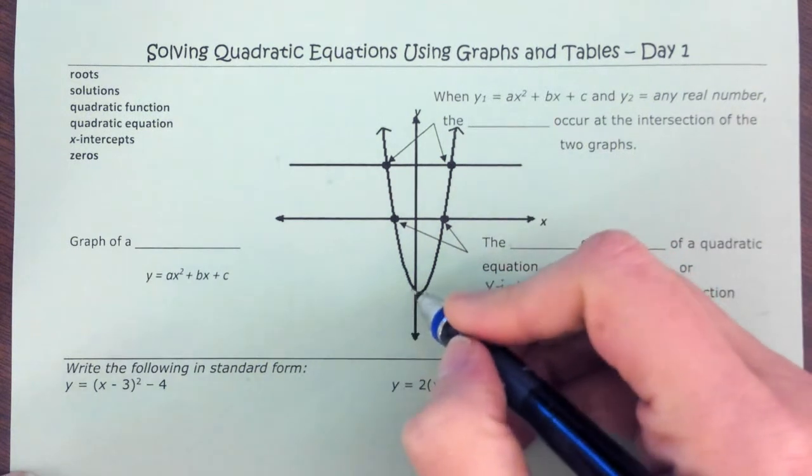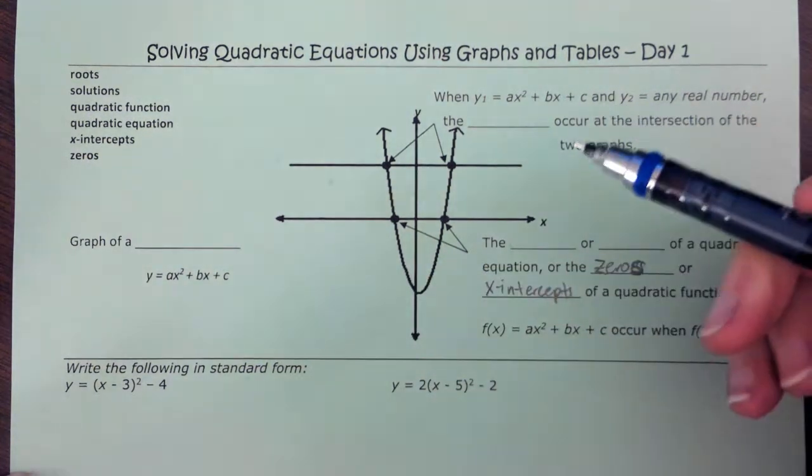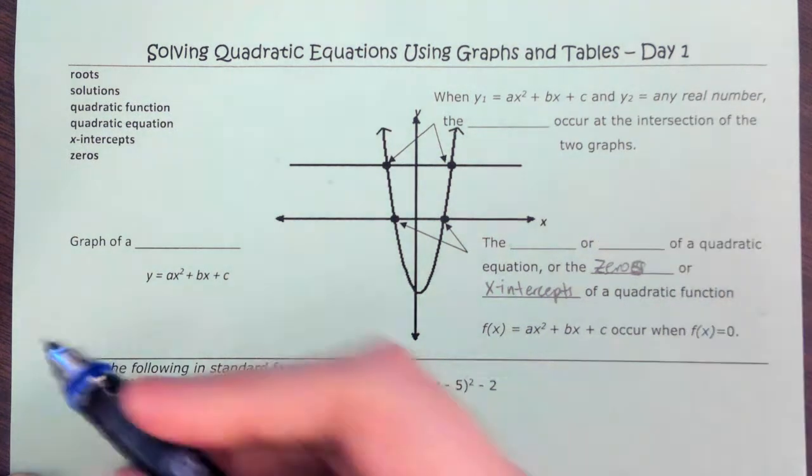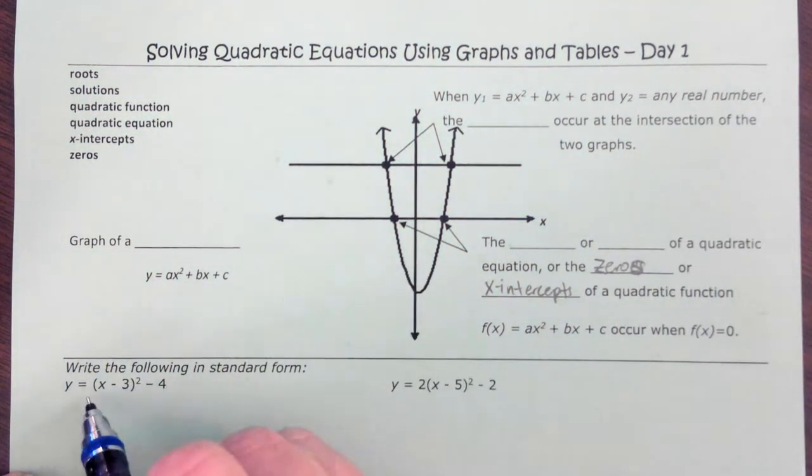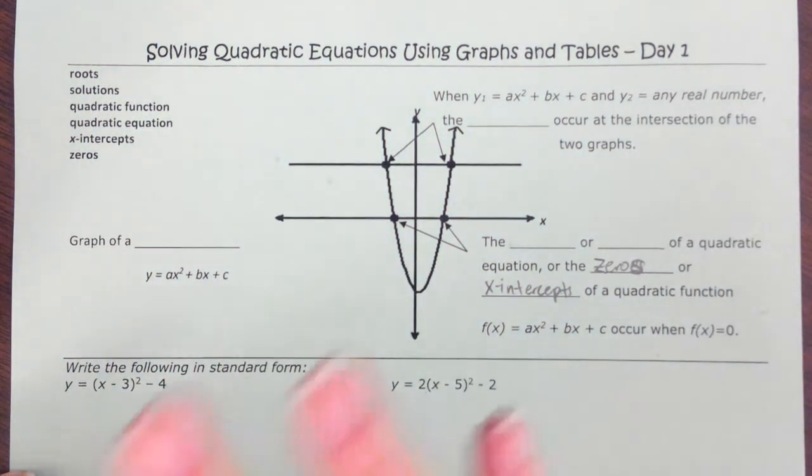We have our y-intercept, which is where it crosses the y-axis. We've talked about the a value, which is not the same as this a value. It's actually the value right here, because we did a lot in vertex form.